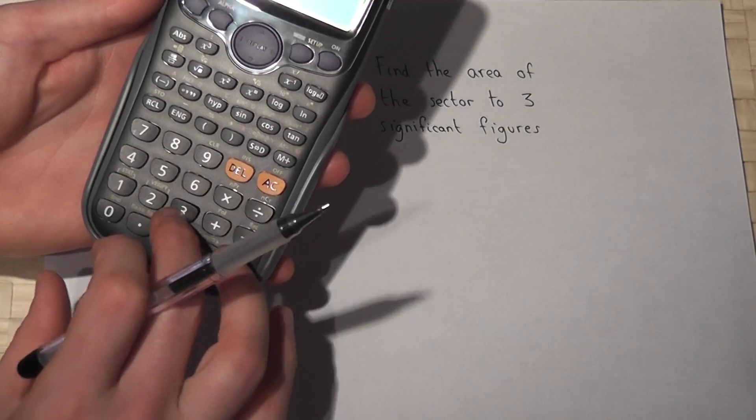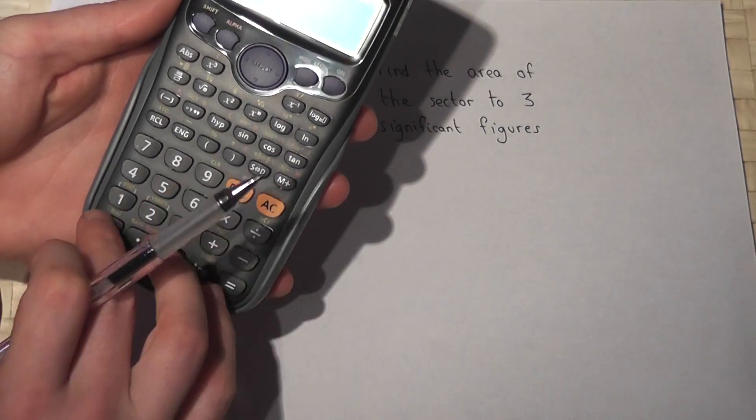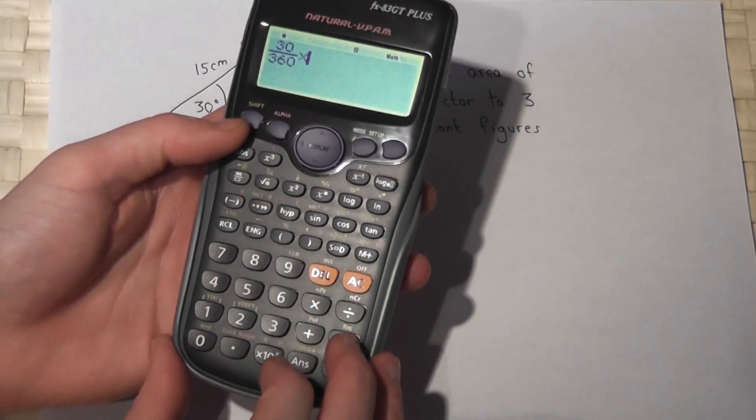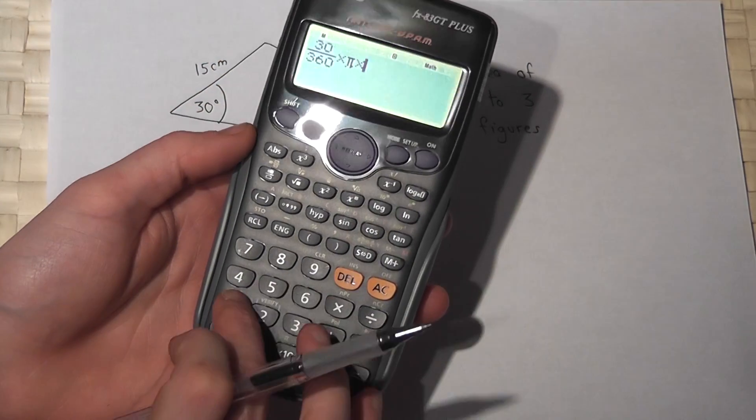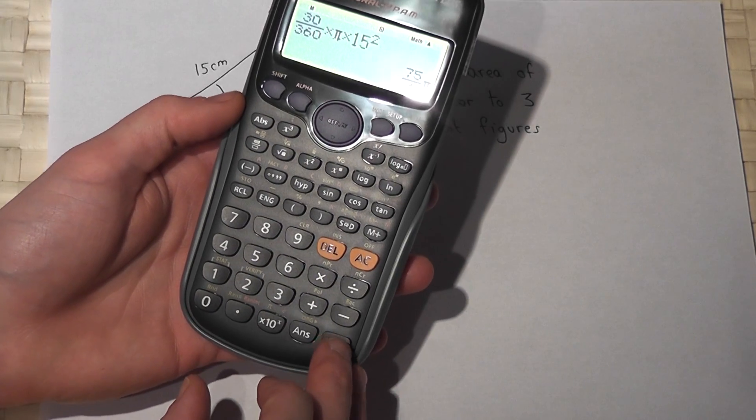So 30 over 360 times by pi times by 15 squared. Press enter.